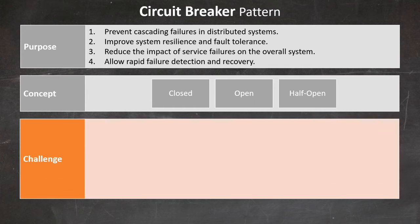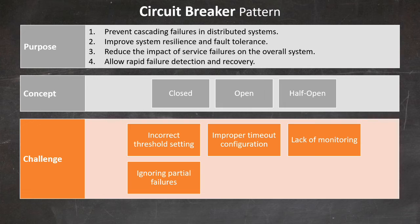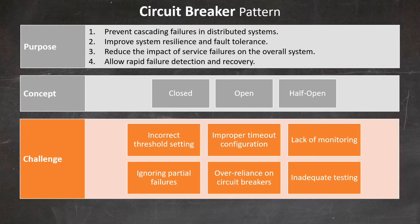There are always challenges and common mistakes to avoid when implementing this pattern. The first common mistake is setting the failure threshold too low or too high, which can lead to premature tripping or delayed response to failures. Next is failing to set appropriate timeouts, which can result in resources being held unnecessarily or premature request termination. Third is lack of monitoring — not implementing proper monitoring and alerting for circuit breaker state changes can lead to undetected issues. Then we have ignoring partial failures, focusing only on complete service failures and neglecting degraded performance scenarios. Another common mistake is over-reliance on circuit breakers — they should be part of a comprehensive resilience strategy, not a sole solution for fault tolerance.